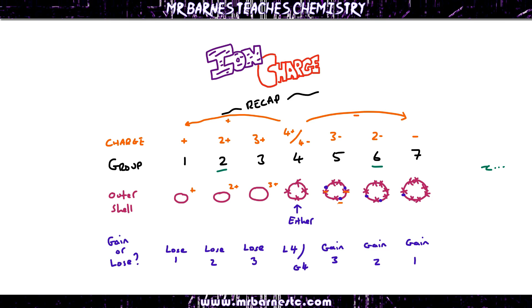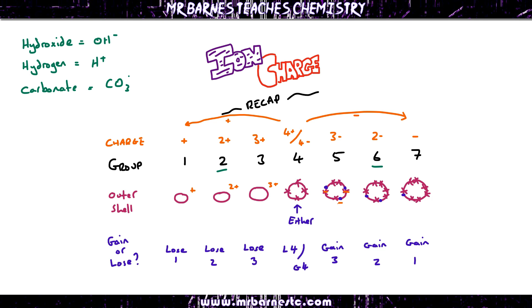Now there are a few polyatomic compound ions that you just have to remember. Hydroxide is OH−. Hydrogen is H+. Carbonate is CO₃²−; remember that the 3 at the bottom is not part of the charge — the charge is the 2−. Nitrate is NO₃−; again it's a −1 charge, the 3 is not part of the charge. And sulfate is SO₄²−; again the 2− is the charge.